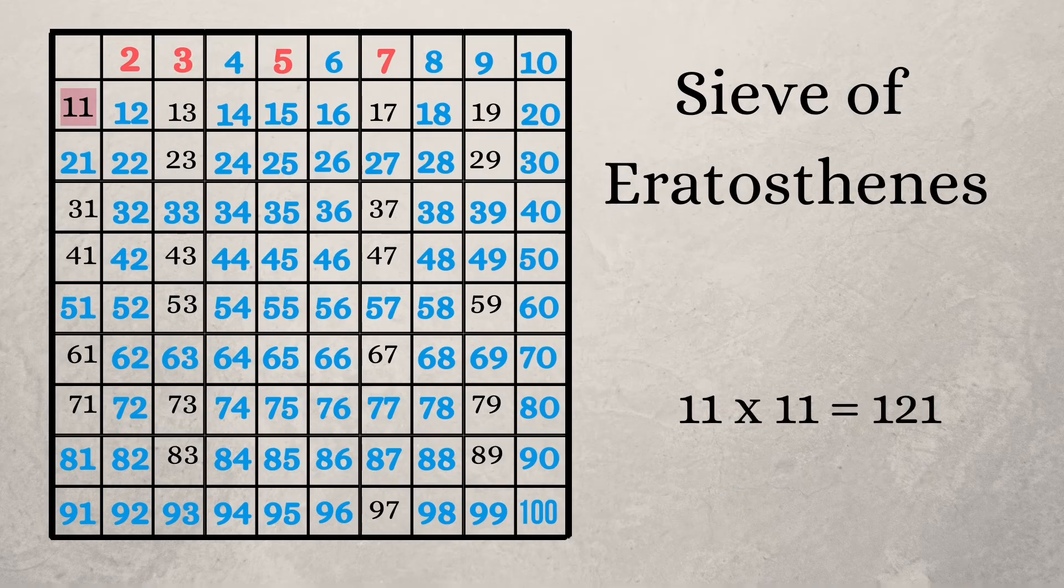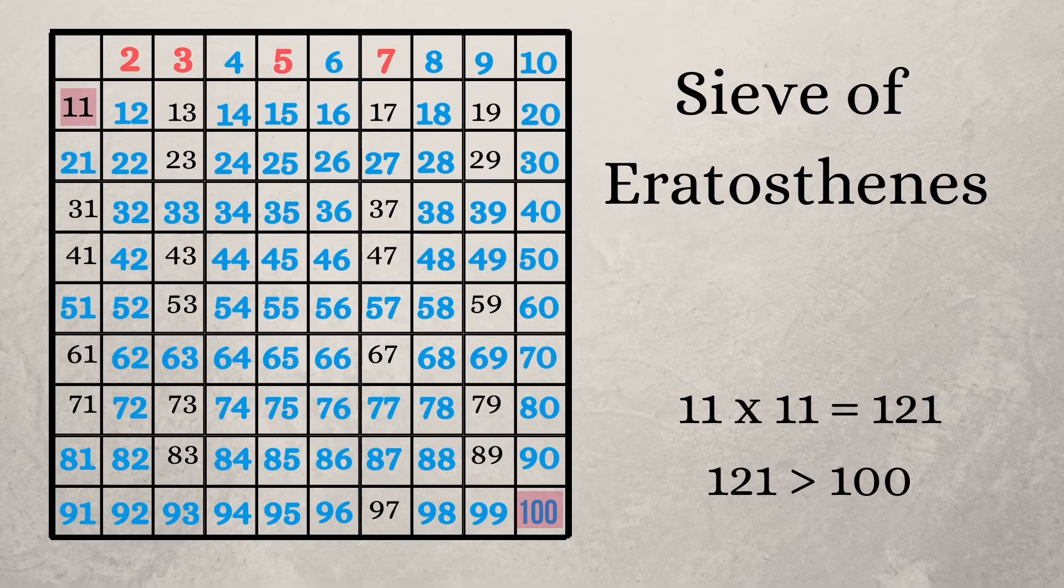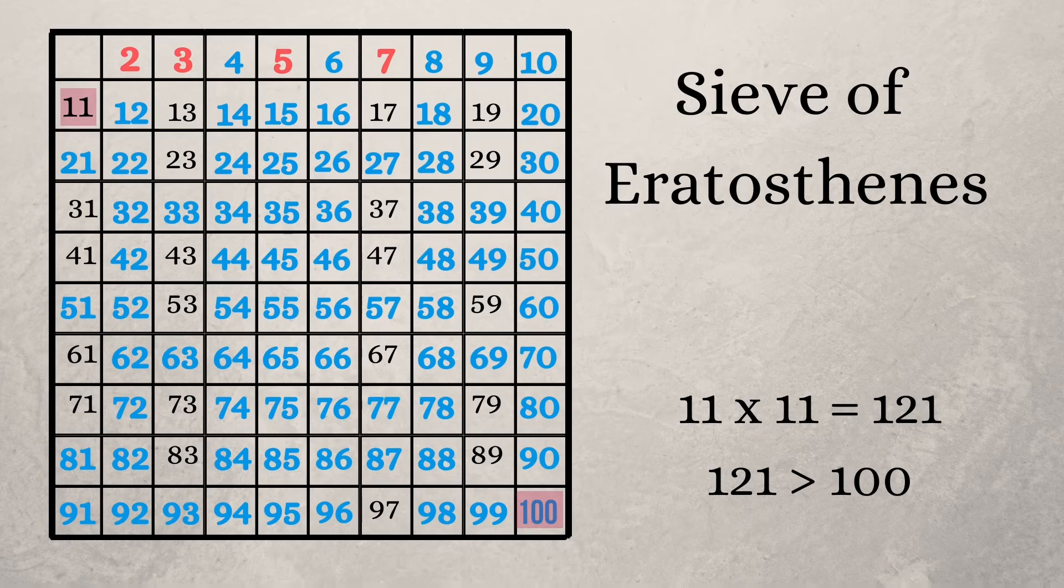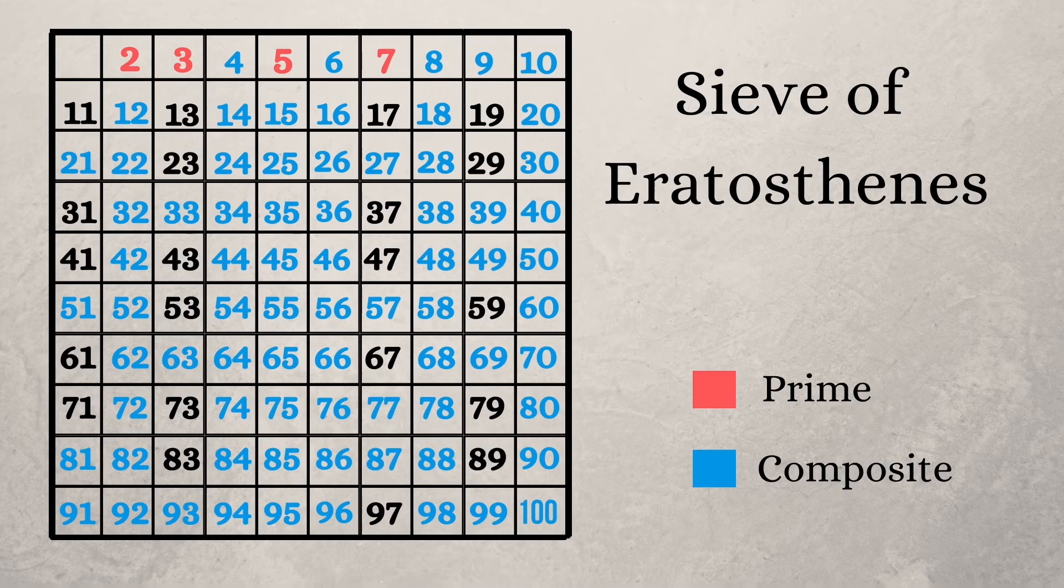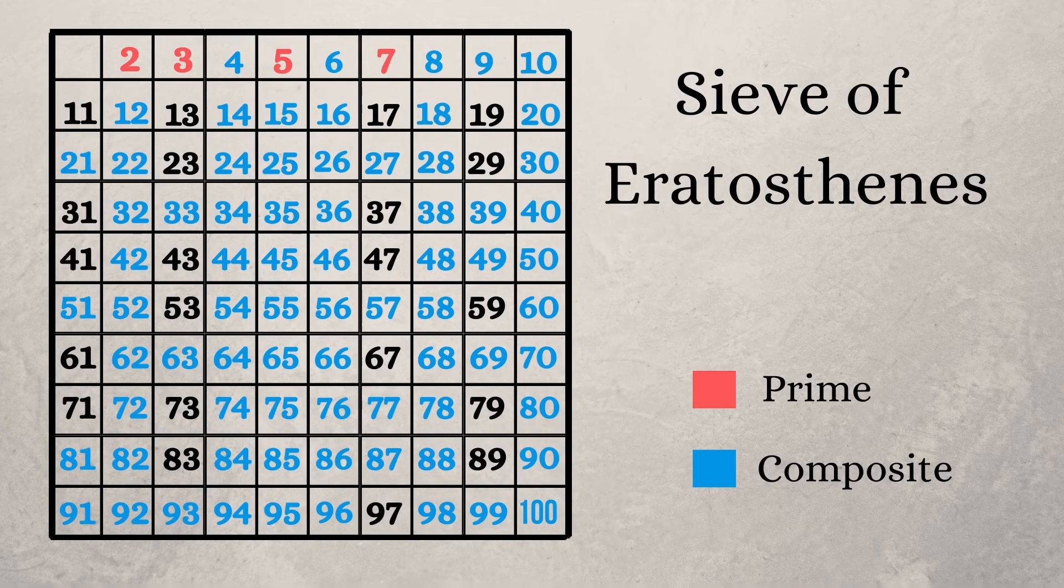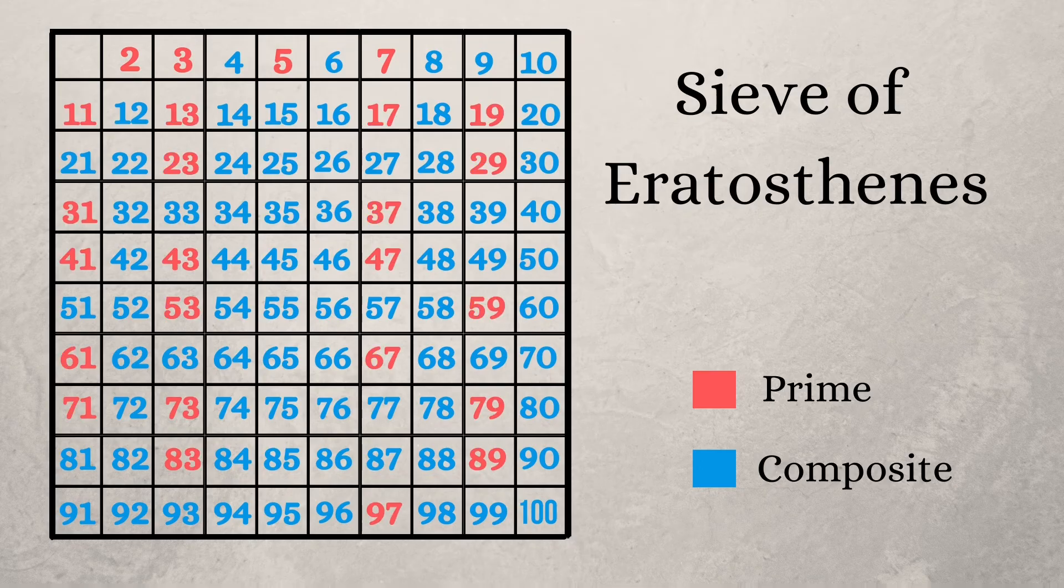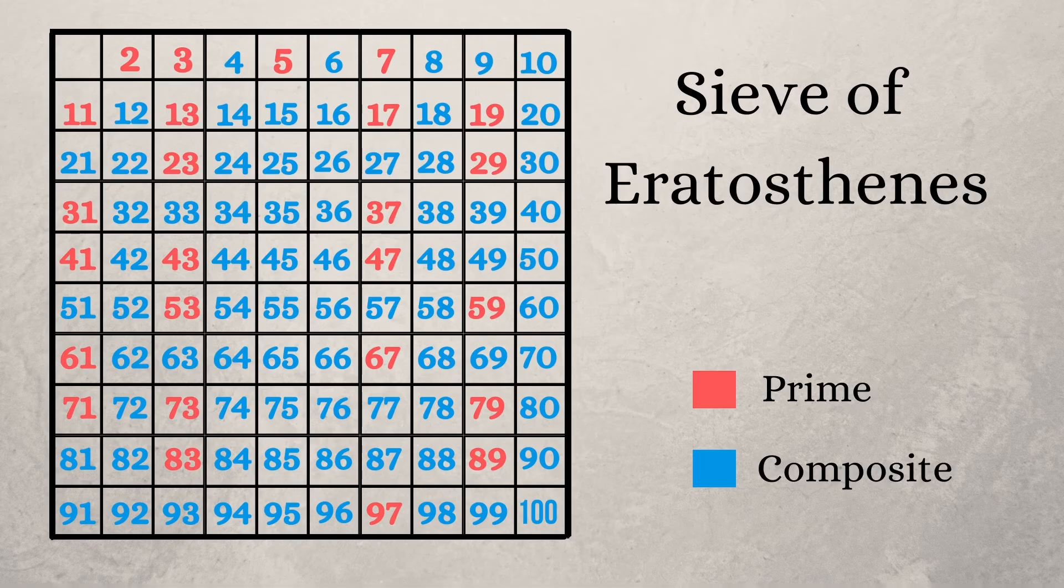Before marking 11 as a prime number, we are going to find out 11 times 11, which is 121. This number 121 is larger than the biggest number in our set, which is 100, so we can conveniently mark all the other unmarked numbers as prime numbers. Thus you have the entire table marked as either prime or composite numbers.